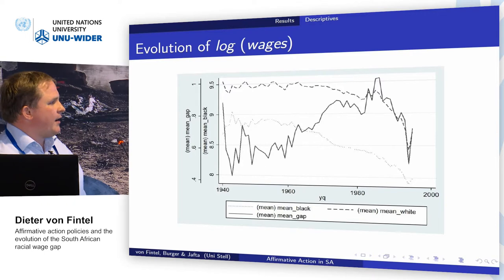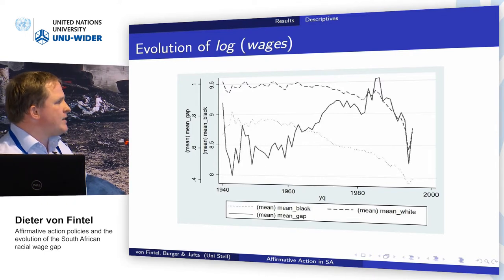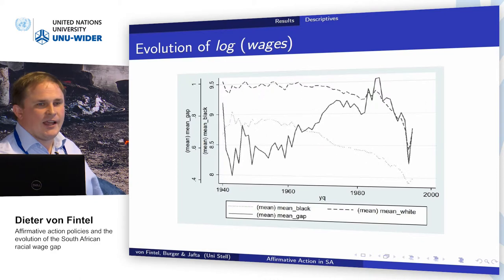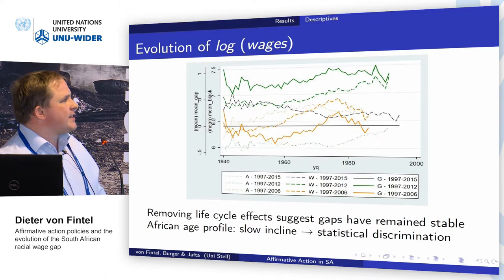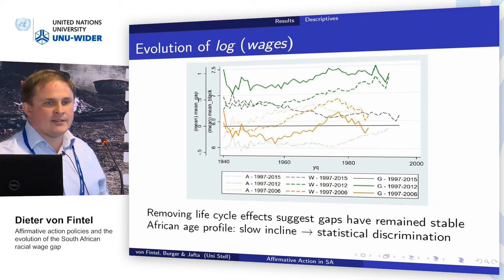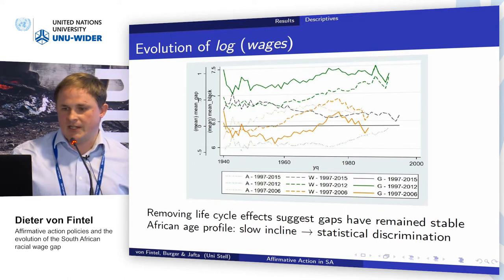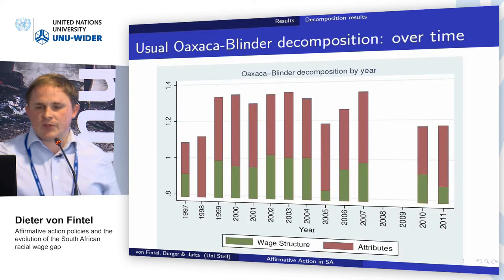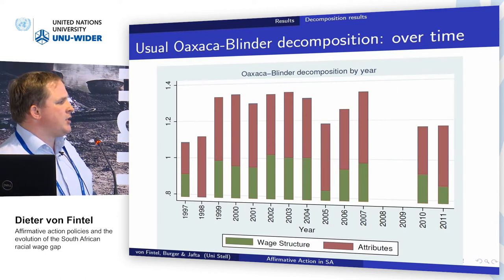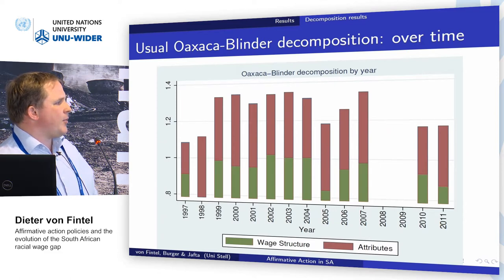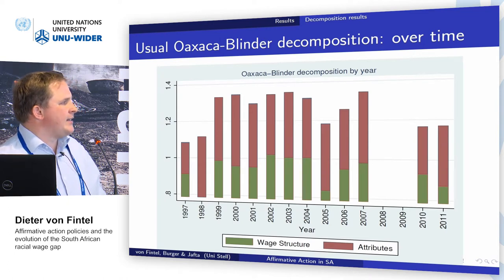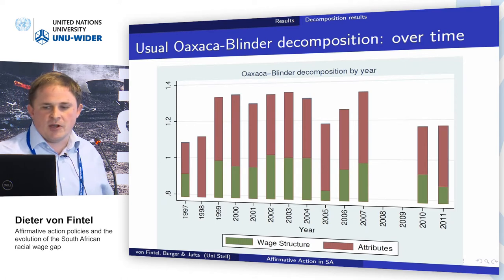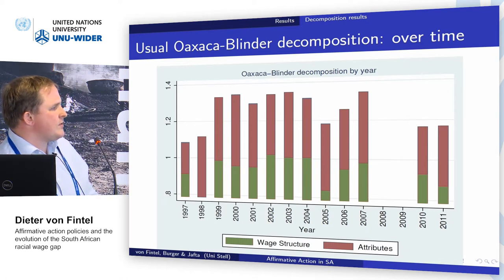We can also recast this by cohort. Wages are declining across cohorts, though there's also an age effect. Across cohorts, the wage gap is actually remaining quite constant. If we apply the usual Oaxaca-Blinder decomposition in each time period, we see the increasing wage gap only declining much later towards 2011. We actually don't see any systematic decline in the discrimination component, except perhaps towards the end of the period.